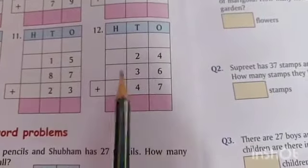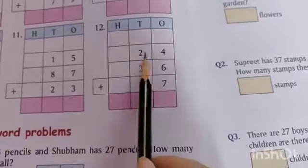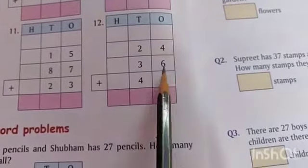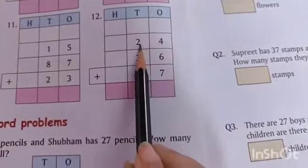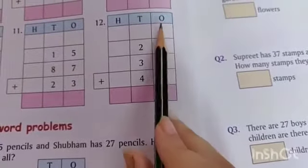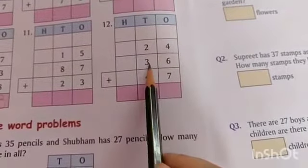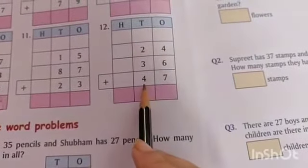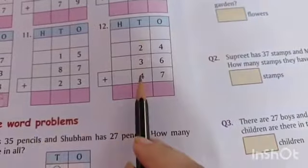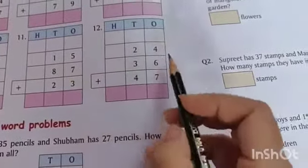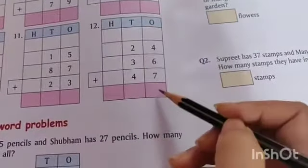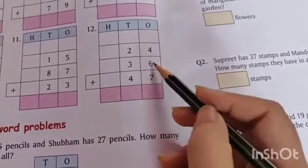In the 12th equation, here we have to add 24, 36, and 47. In 24, 4 ones and 2 tens. In 36, 6 ones and 3 tens. And in 47, 7 ones and 4 tens. So first add ones column: 4, 6, and 7.